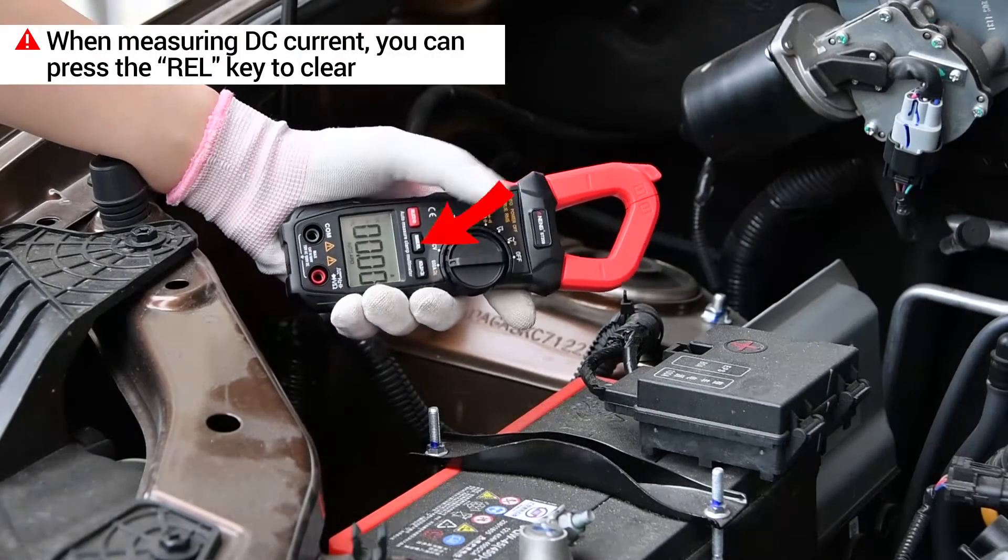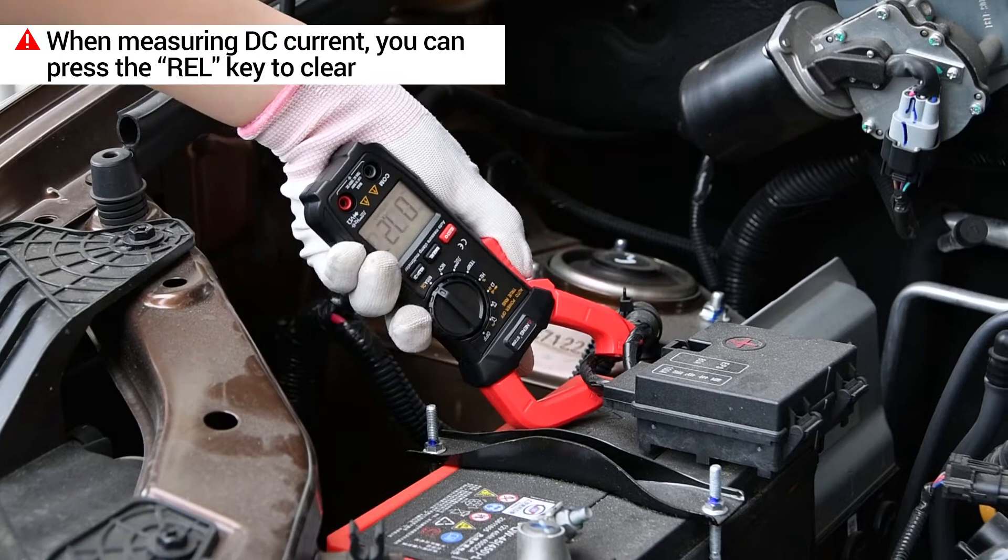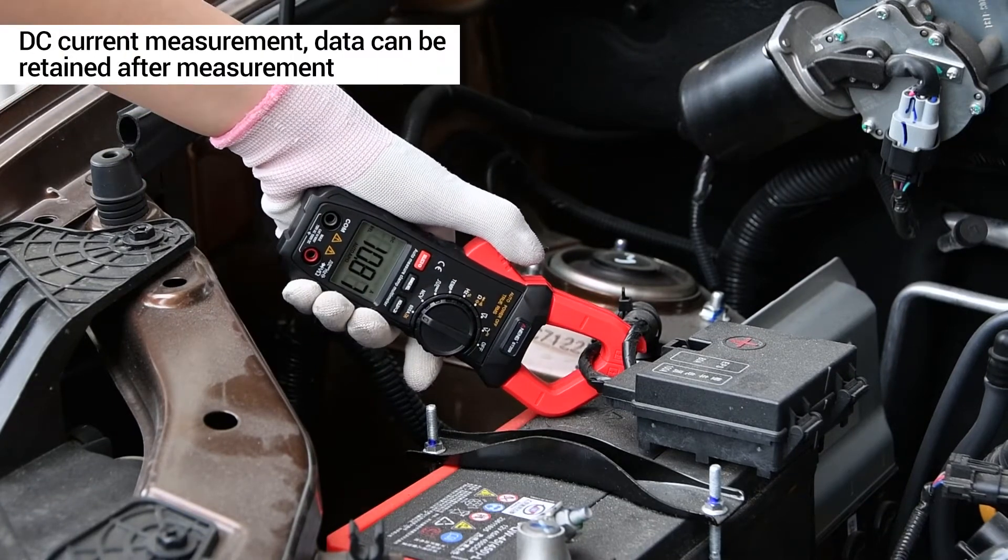When measuring DC current, the value jump is normal. You can press the wire key to clear.